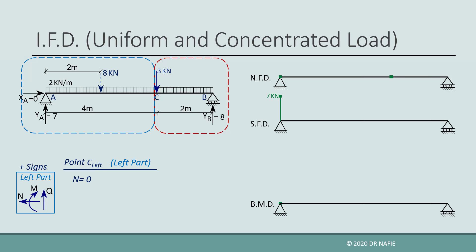The normal force will be zero as before. The shear force will be the sum of all the vertical forces in the left part: positive yA and the negative 8 kilonewton equivalent force, giving a value of negative 1 kilonewton for the shear. We draw this value in the shear diagram and connect it to the value at point A using a straight line.